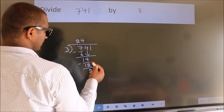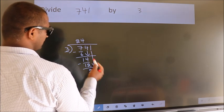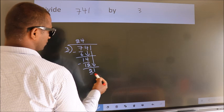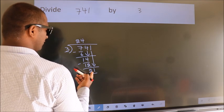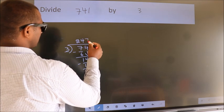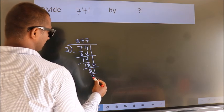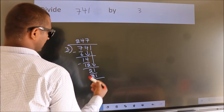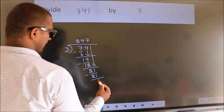After this, bring down the beside number. So 1 down. So 21. When do we get 21? In 3 table. 3 7's 21. Now we subtract. We get 0.